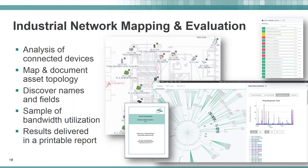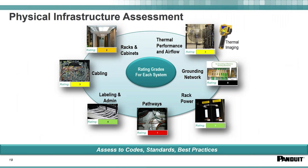Using that information, we evaluate against seven different functional areas: racks and cabinets, cabling, labeling, administration, pathways, power to all the racks and devices, grounding, as well as thermal performance and airflow.